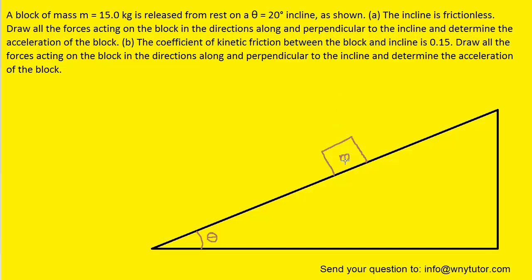We'll begin with the perhaps most obvious force, and that would be the force of gravity, which is pulling the block straight down. So we can draw a force vector that points straight down. The only other force acting on the block is the normal force, which results from the incline actually pushing back against the block as the block pushes into the incline. So we'll have a second force vector, and we want to make sure that when we draw that normal force it's actually perpendicular to the surface of the incline.